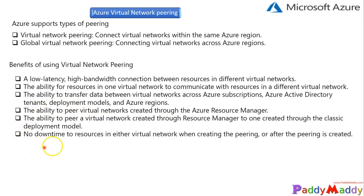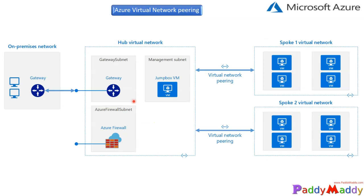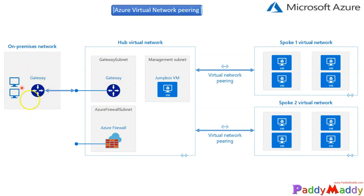Looking at a hub and spoke design model: you have a spoke one virtual network and a spoke two virtual network. You can add a hub network that both spokes are peered with. The hub network contains a gateway subnet with a site-to-site or point-to-site VPN connection to your on-premises network. This way, all traffic can reach on-premises through the hub, and all machines can communicate with each other through the VPN gateways.